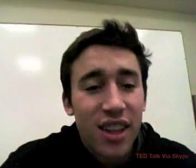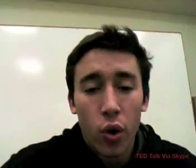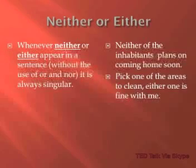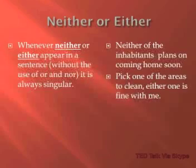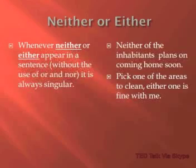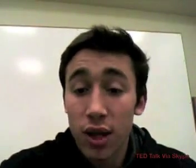This next part is a little bit tricky — we're going to be dealing with the words 'neither' or 'either.' Whenever neither or either appear in a sentence when you're not using the words 'or' or 'nor,' it's always going to be singular. For example, 'neither of the inhabitants plans on coming home soon.' It looks like it's plural, but 'neither of the inhabitants' is only referring to one at a time. Another example: 'pick one of the areas to clean — either one is fine with me.' So 'either' is only one thing; you get to pick one or the other.